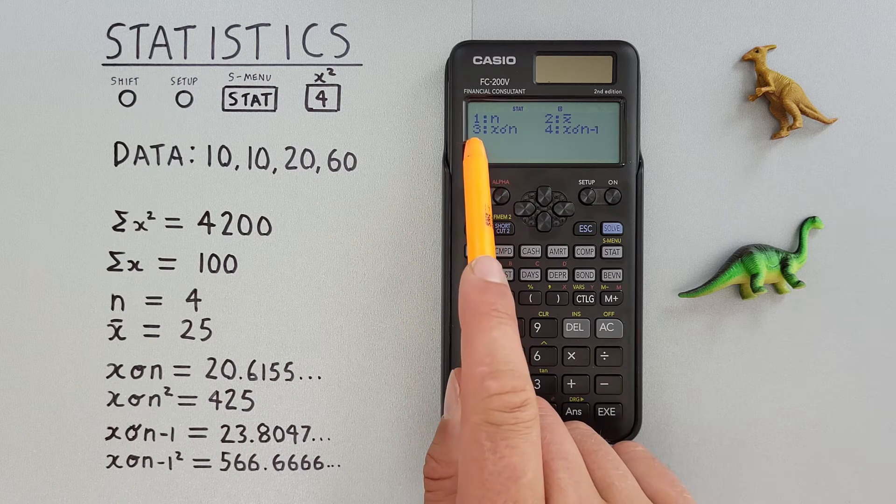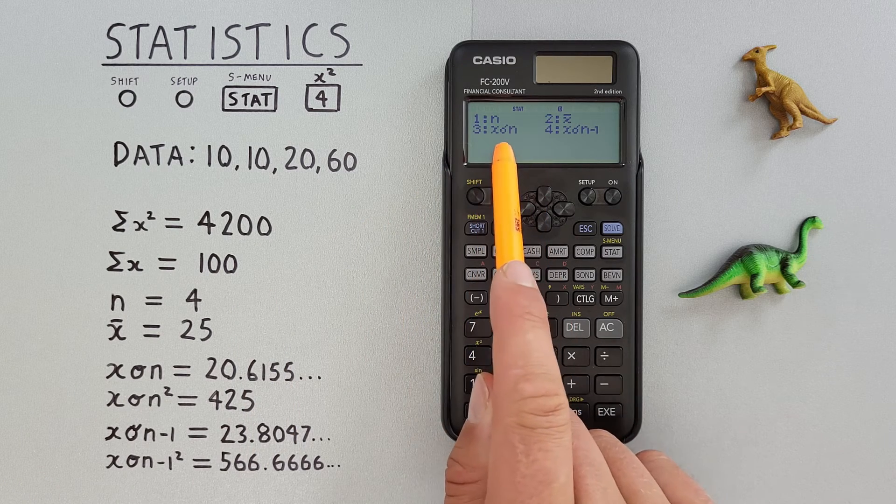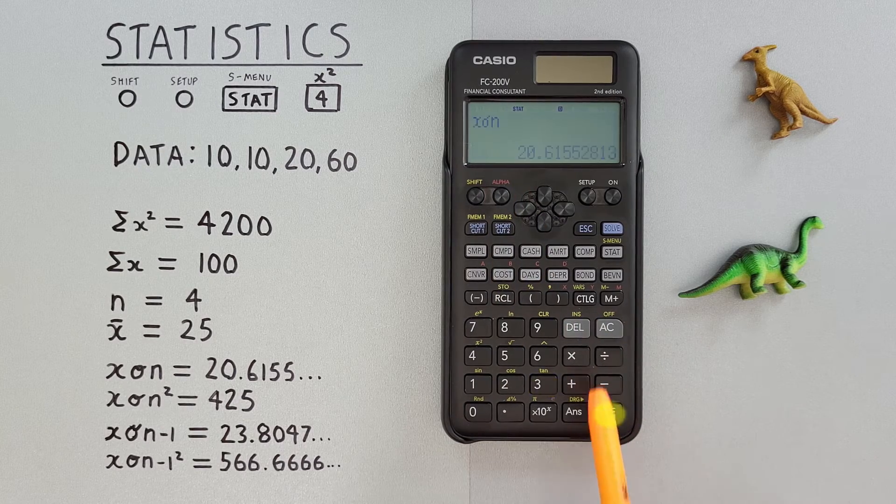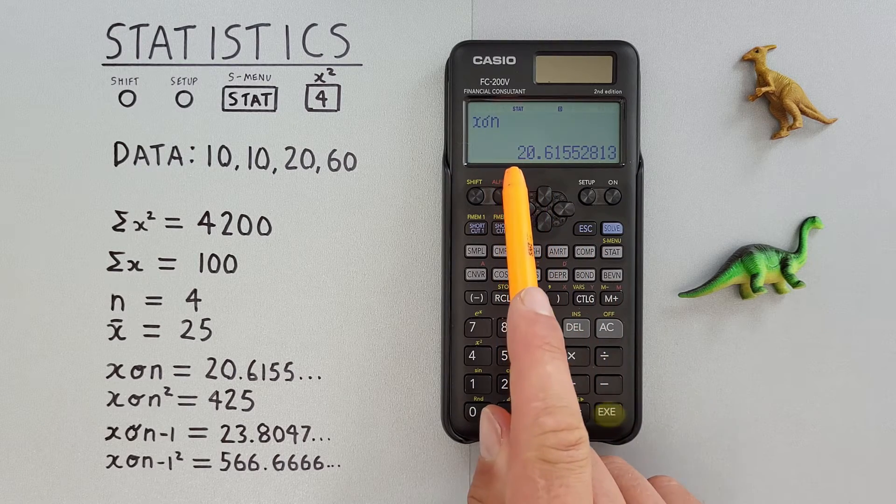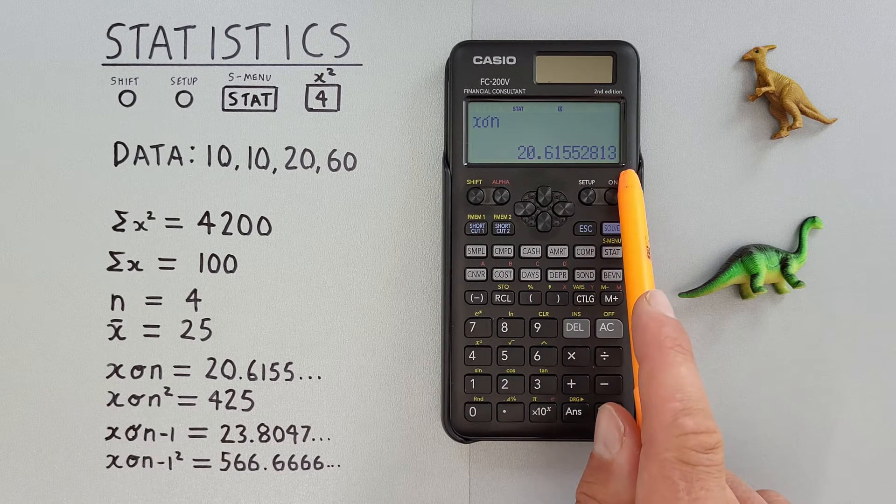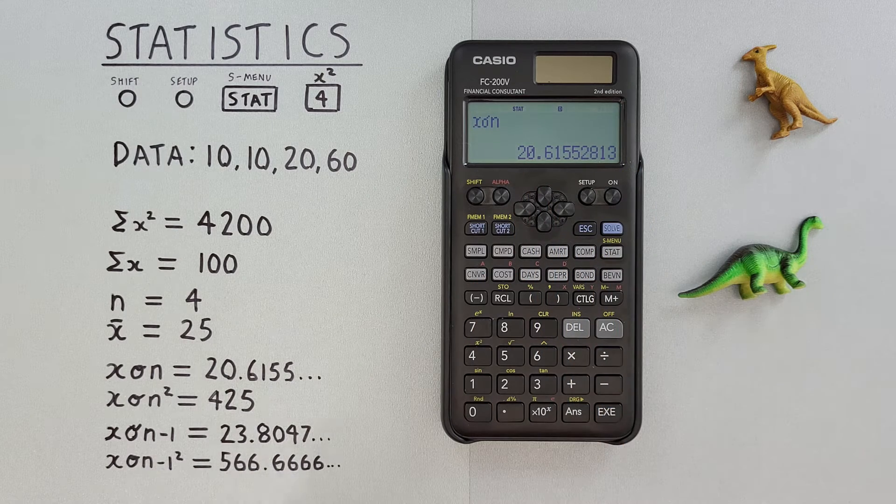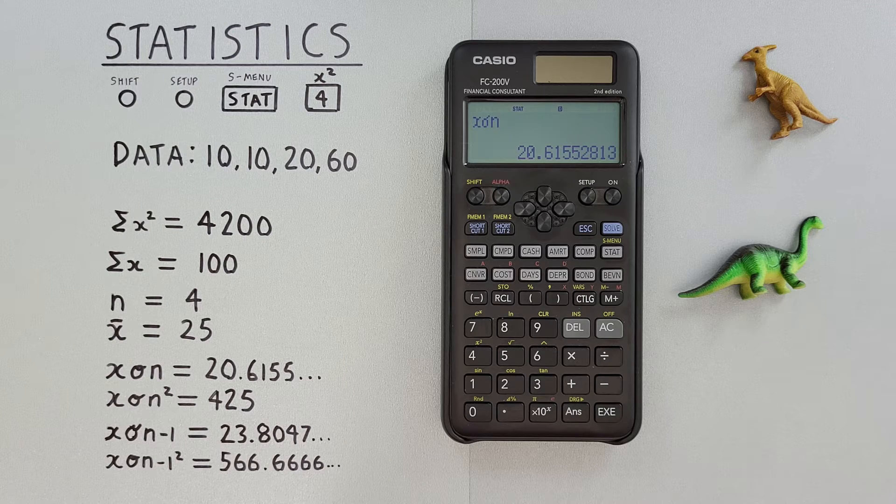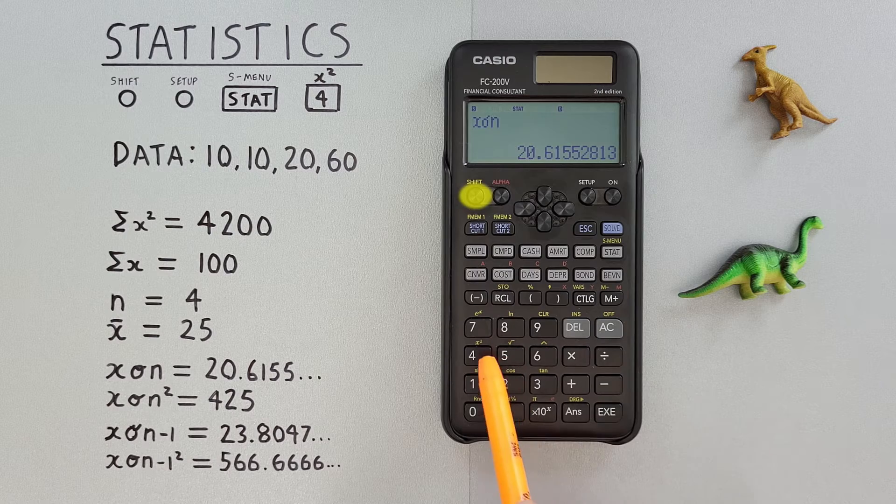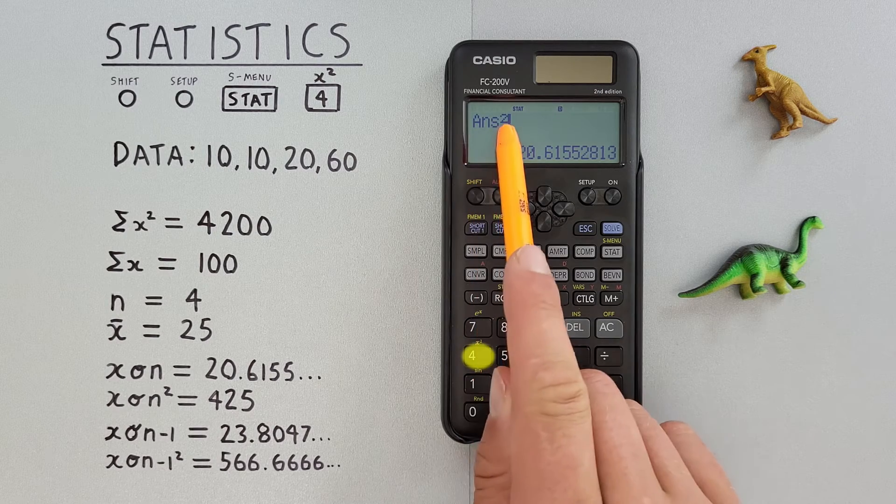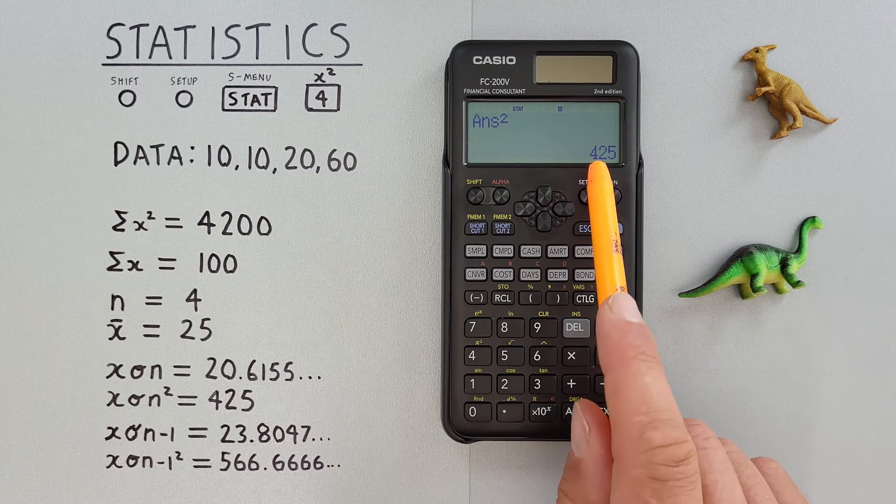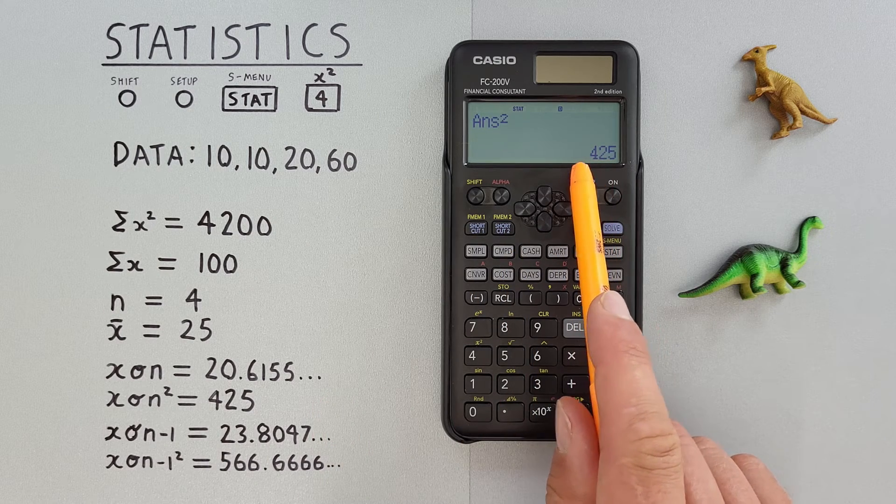Next, number three here is population standard deviation. So we can press three to get that, hit EXE, and our population standard deviation σn = 20.6155. And if we want to get our population variance, we just square that with shift 4, so we get our answer squared. Hit EXE, and we get a population variance σn² = 425.